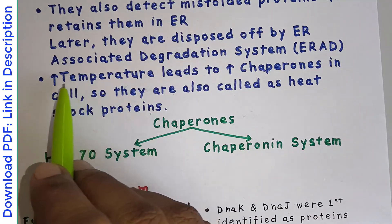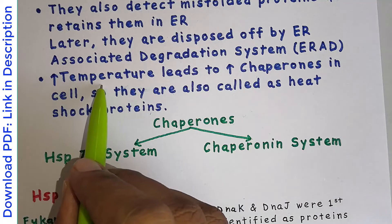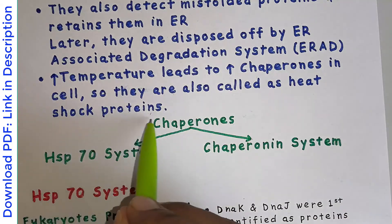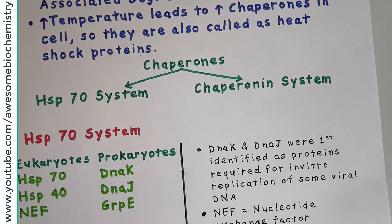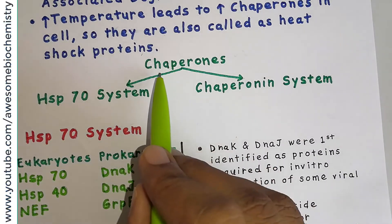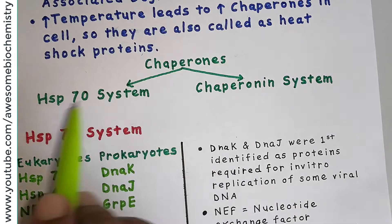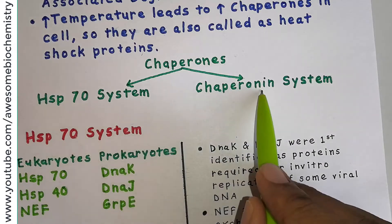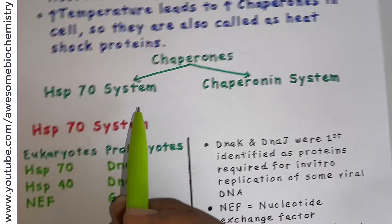Because chaperones respond to high levels of heat, they are also called heat shock proteins. They act as shock absorbers for increased temperature. In our cells, there are two types of chaperones: one is the HSP70 system, and the other is the chaperonin system. Let's discuss them one by one, starting with the HSP70 system.